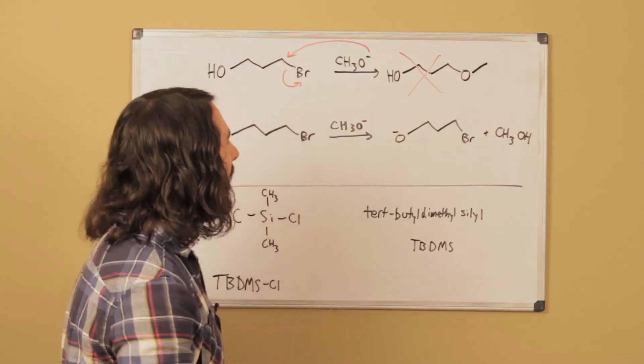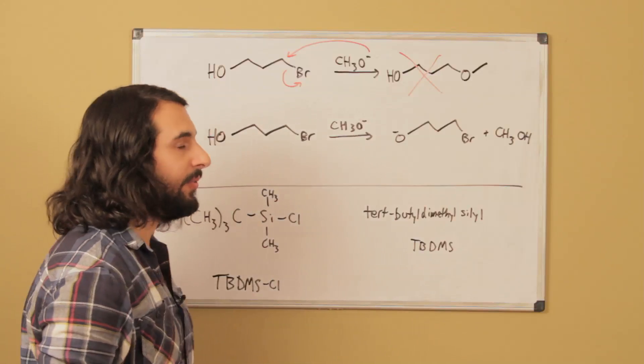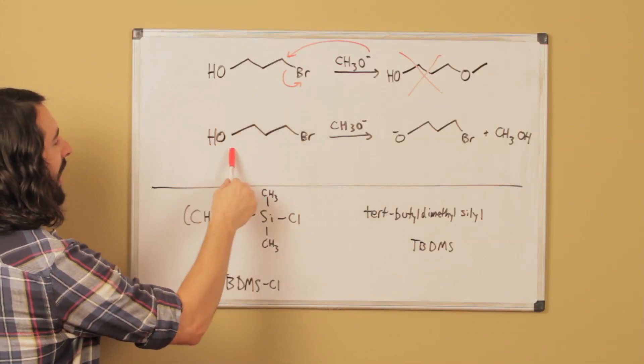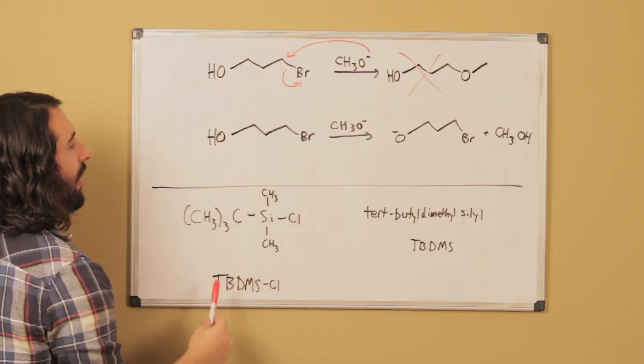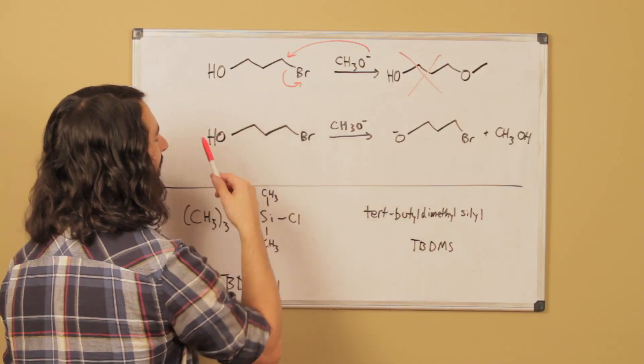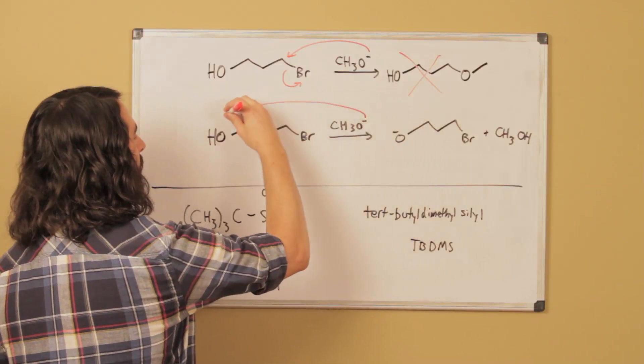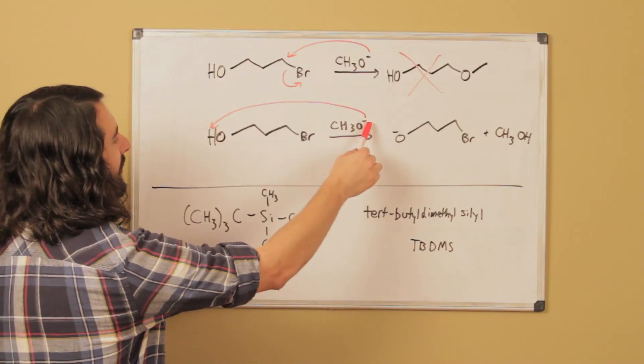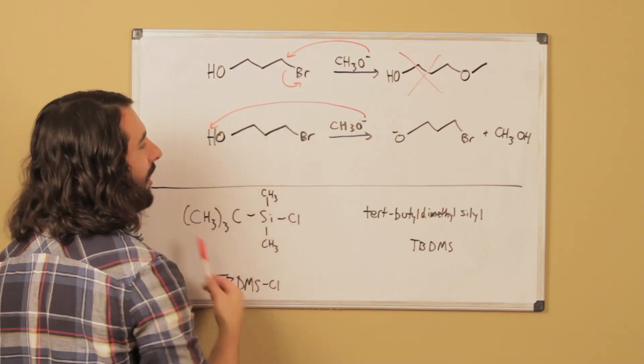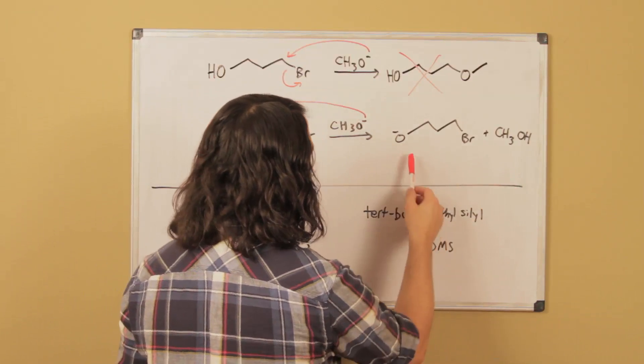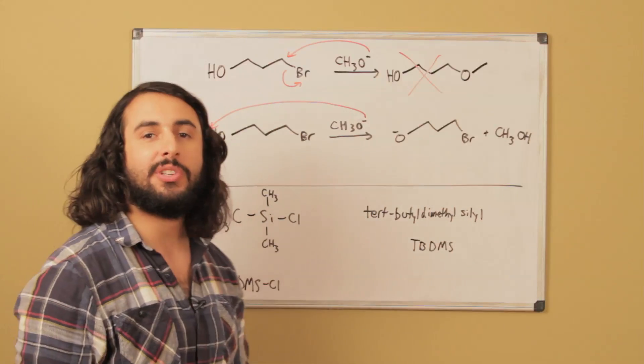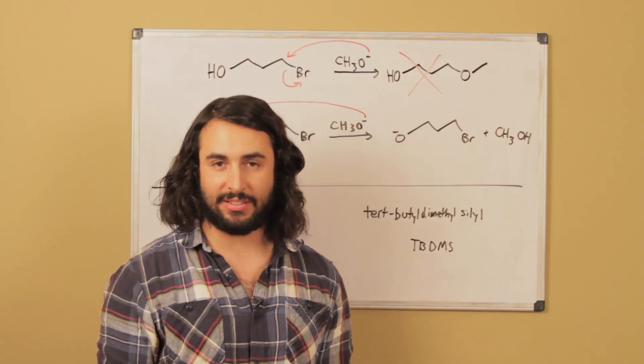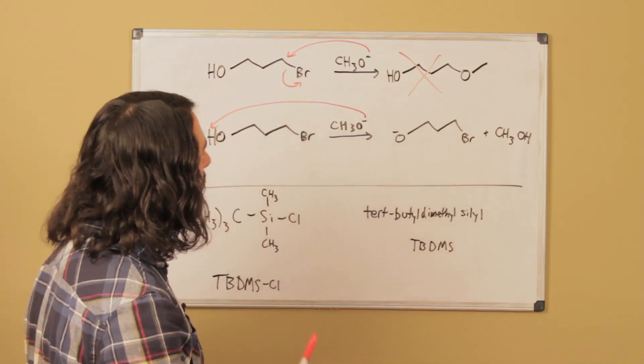It's not going to go SN2. Not only is this a good nucleophile, it's also a very strong base. Because we have a hydroxyl group here, this is acidic enough that a strong base will do an acid-base reaction. This methoxide is going to pick up that proton to form methanol, and we'll have the alkoxy group there. We've ruined our nucleophile, we're not going to get any SN2.